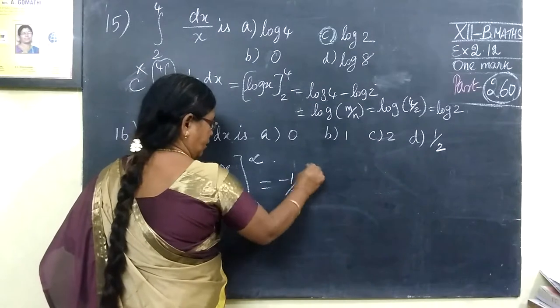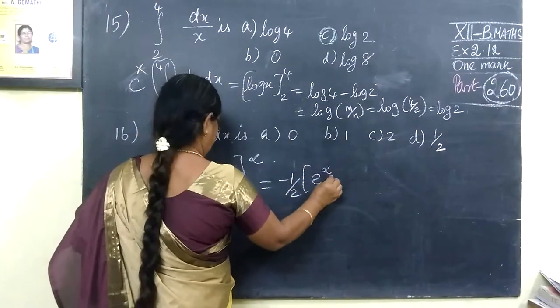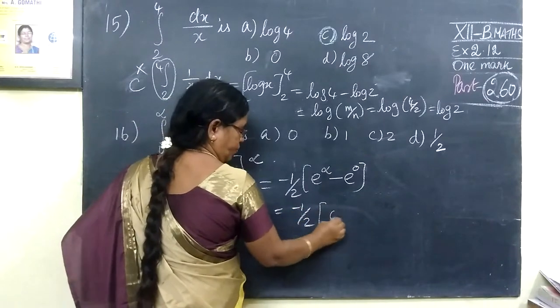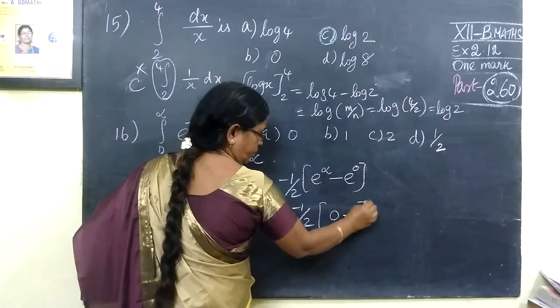You know it very well, right? So upper limit minus lower limit. e to the power infinity is 0, e to the power 0 is 1 by S.